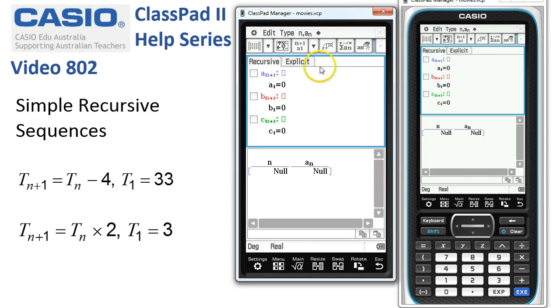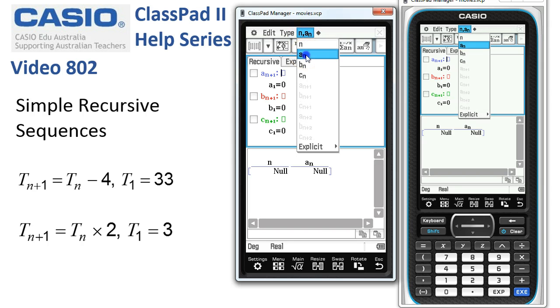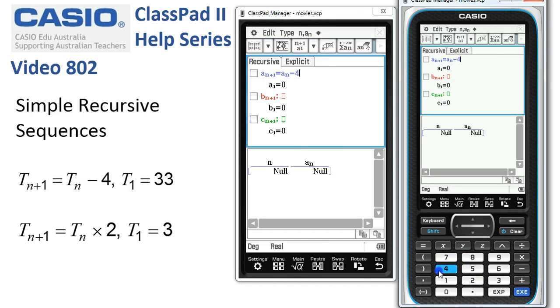Type a1. We type in the rules so we use the drop-down menu from here to create an, an minus four. So I'll use the buttons on classpad over here. Tap execute.